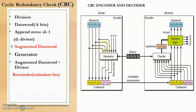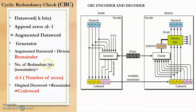The augmented data word is passed to the generator, which divides it by the divisor. The remainder of this division gives the redundant bits, which are added at the end of the data word to create the codeword. The number of bits in the remainder is d-1, which is the same as the number of zeros that were appended. For example, if 3 zeros were appended, the number of redundant bits will also be 3.